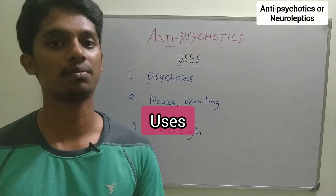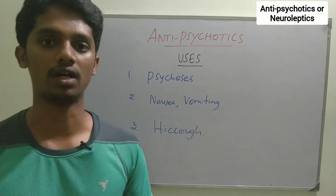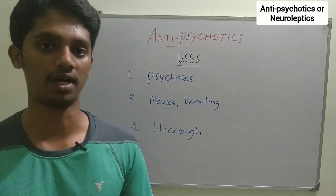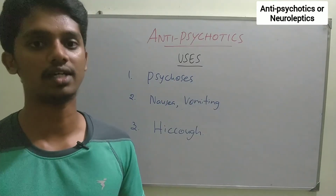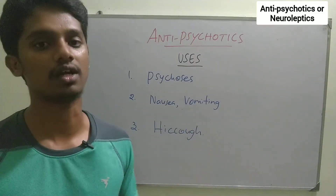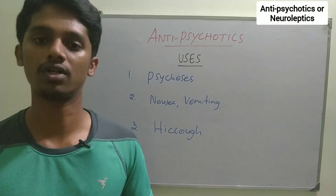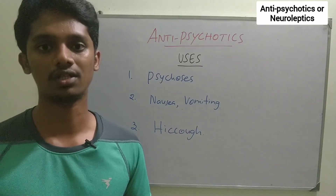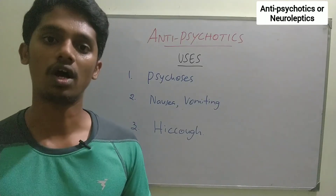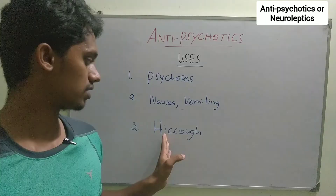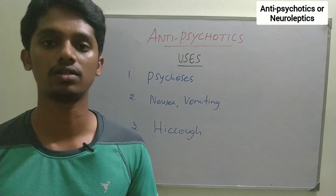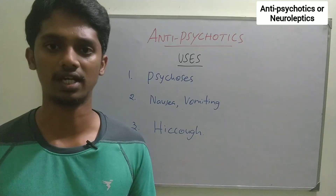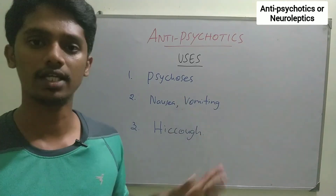Uses of anti-psychotics: First, they are used for psychosis — including schizophrenia, mood disorder, and personality disorder. Second, they are used for nausea and vomiting, as an anti-emetic action. Chlorpromazine can block the CTZ and be used for this. Third, they can be used for hiccups. These are all the main uses of anti-psychotics.